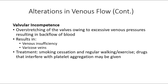Valvular incompetence: most of what we've looked at has been in arteries. Thrombus formation can be in arteries or veins, embolus can travel through arteries or veins. However, valvular incompetence only affects veins — only veins have valves — so this is a venous issue.